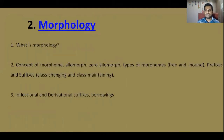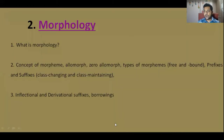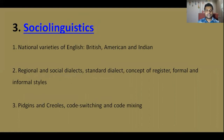The next topic is morphology — how words are formed. This section covers: what is morphology, the concept of morpheme, allomorph, zero allomorph, types of morphemes — that's free and bound — prefixes and suffixes, that's class-changing and class-maintaining, inflectional and derivational suffixes, and borrowings.